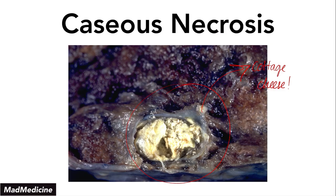These are the first three types of necrosis we've discussed. In part two, we will be discussing the last three: gangrenous, fat, and fibrinoid. If this was helpful for you, consider subscribing to our channel because with your support we're able to keep this content free. And if you want to see more content like this, go to our website at www.madmedicine.org where you'll find additional resources and educational videos for your learning purposes. Thank you.